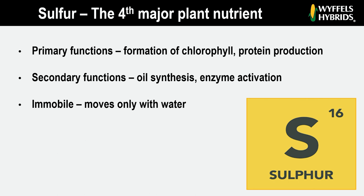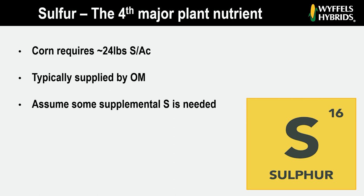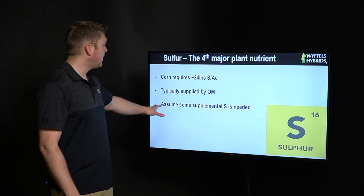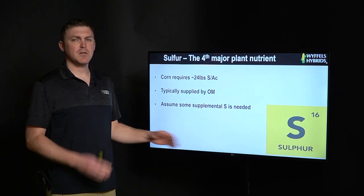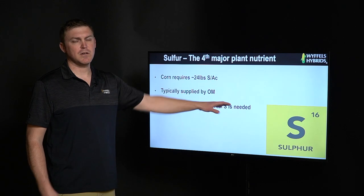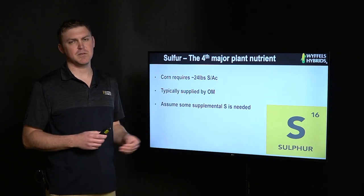Sulfur within the plant is actually a mobile nutrient, meaning it moves primarily with the transport of water. Corn requires on a per acre basis about 24 pounds plus or minus of actual sulfur per acre year over year. It's typically supplied by soil organic matter, so if you have more soil organic matter you have more potential to mineralize more sulfur on that particular acre. The opposite would be true on a lower organic matter farm. In general, we need to assume pretty much every year we need to apply some amount of supplemental sulfur to that corn acre, and that becomes especially important in continuous corn situations.